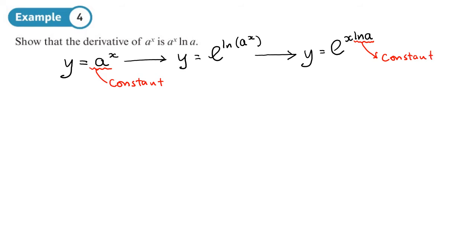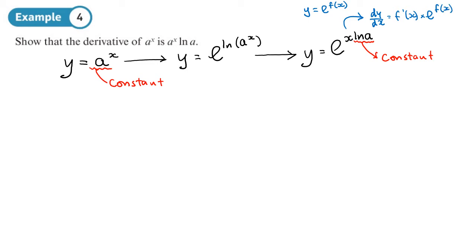If a were, say, five, then you'd just have log(5), which is just another number — a constant. Now we can use the rule where if y equals e to the f(x), then dy/dx equals f'(x) times e to the f(x). We're going to use that to differentiate what we've got here.